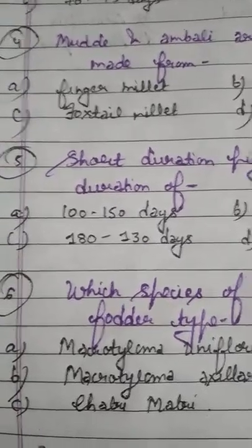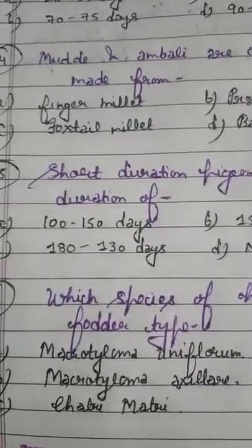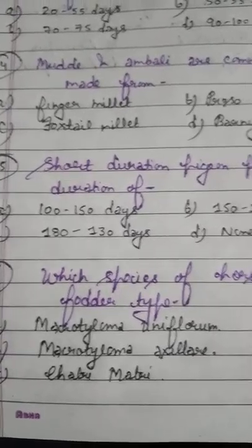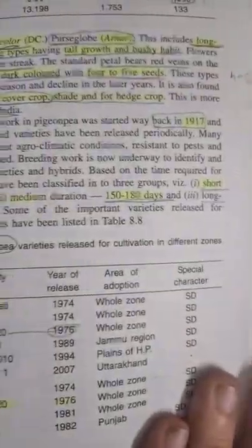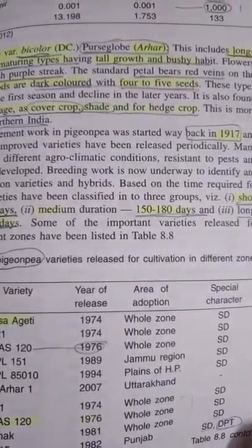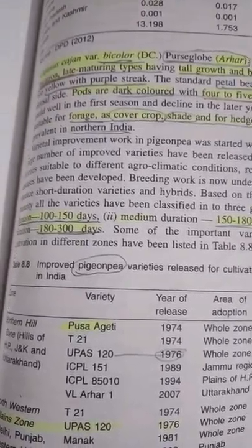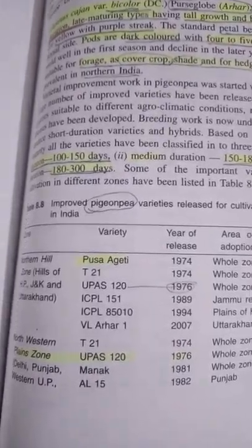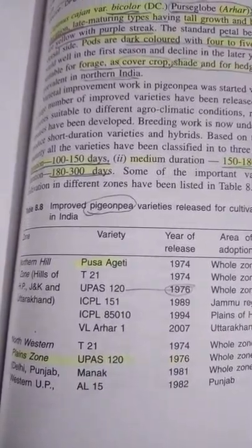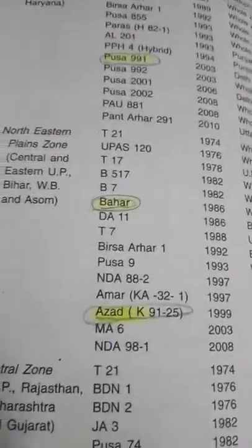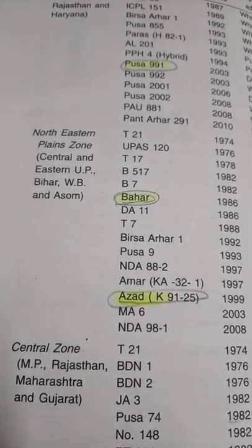Question number 5: short duration pigeonpea has a duration of? Option A: 100 to 150 days. Option B: 150 to 180 days. Option C: 180 to 300 days. The correct answer is option A — short duration pigeonpea has a duration of 100 to 150 days. Medium duration pigeonpea has a duration of 150 to 180 days, and long duration pigeonpea has a duration of 180 to 300 days. Important varieties include Pusa JT, Upas 120, VL Arhar 1 (suitable for hills), Bahar, Azad, and Pusa 991.